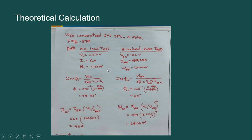To calculate phi naught, we have a formula. After putting the given data in the formula, we get phi naught equal to 78.93 degrees. And to calculate phi SC, we have a formula. Putting the given data in the equation, we get phi SC equal to 60 degrees.